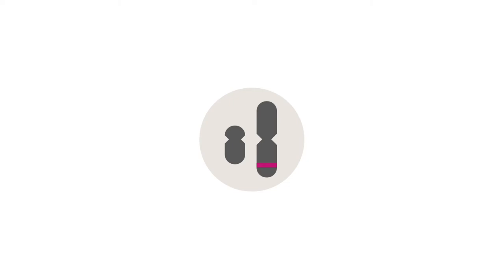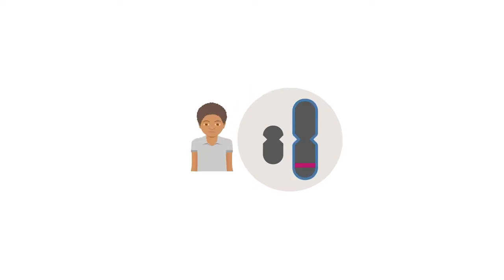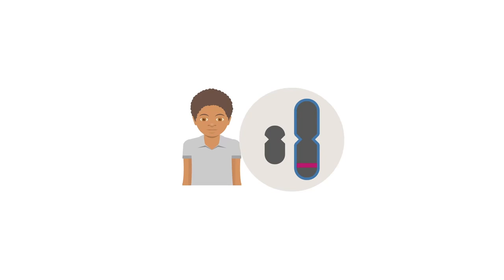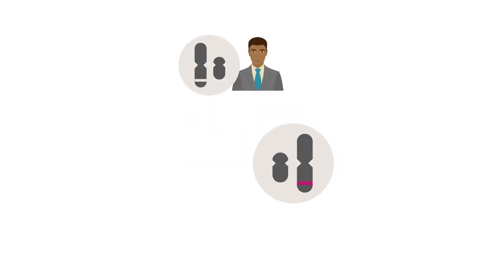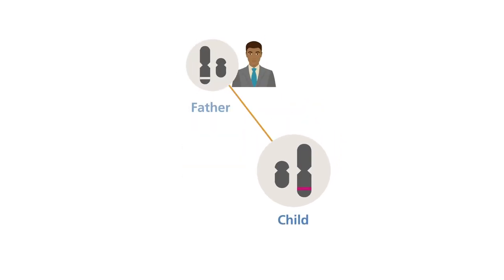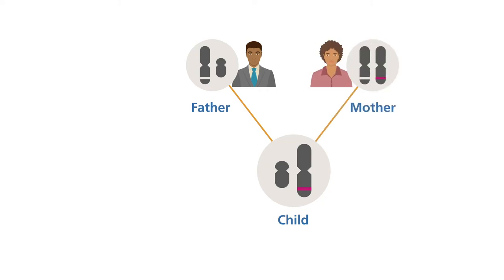X-linked recessive conditions result from gene variants that are present on the X chromosome. In this case, the father has the usual form of the gene on his X chromosome. However, the mother is a carrier for an X-linked recessive condition.